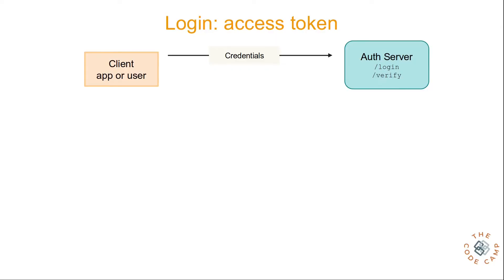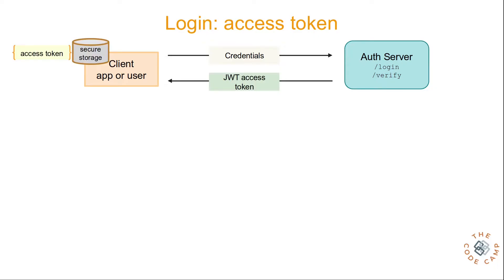The client makes a request to the auth server, sending the credentials in the request. The auth server will verify the credentials, and on successful authentication a token is sent back in the response. This token is short-lived and has an expiry defined in the token claims, and it is the responsibility of the client to store this token in a safe place.